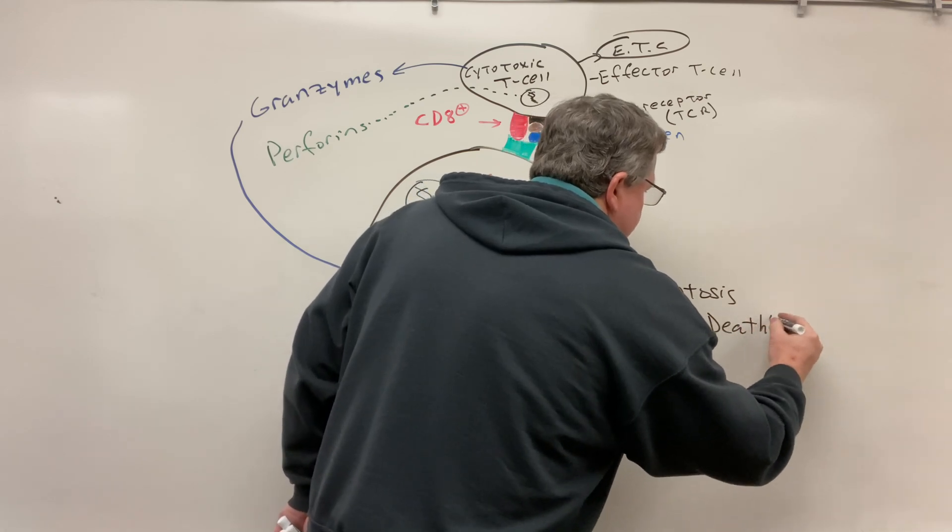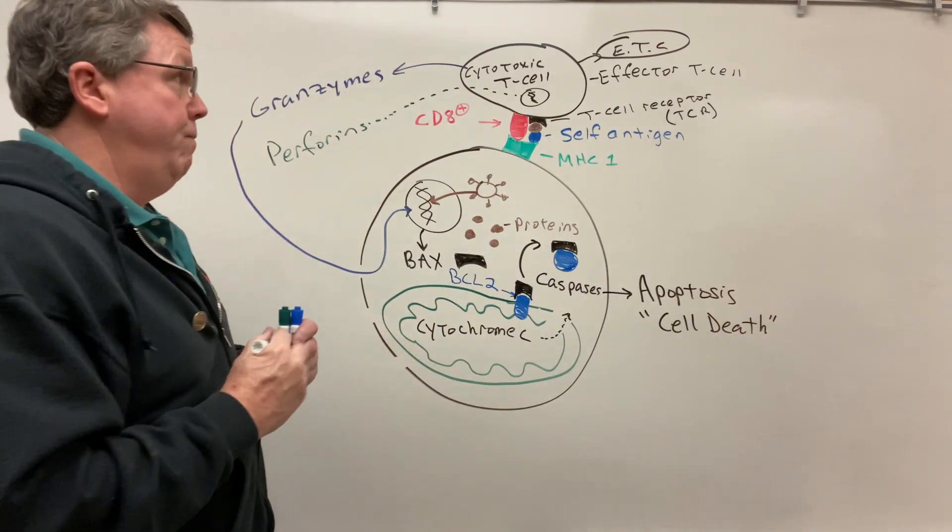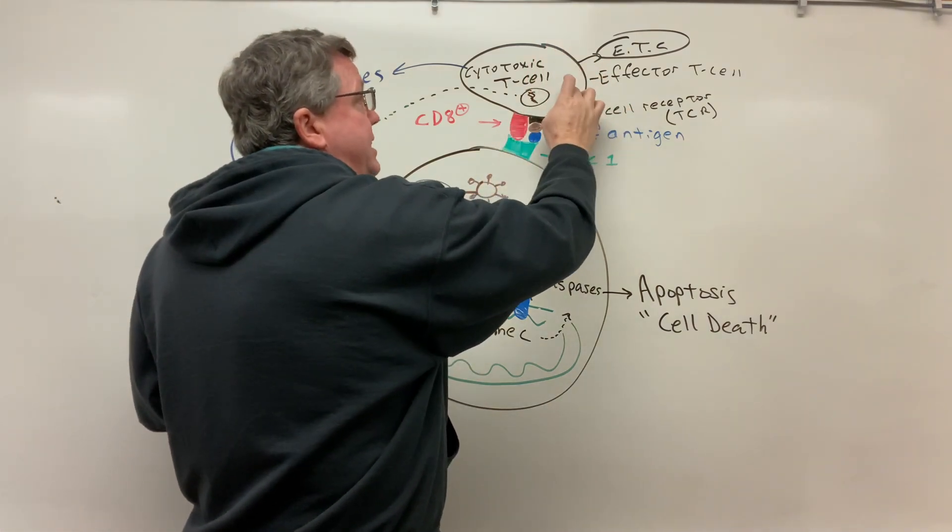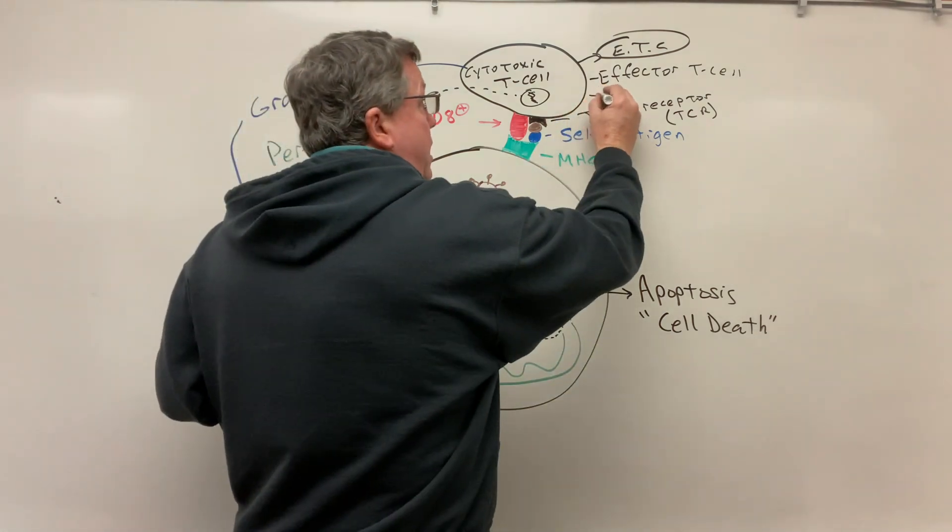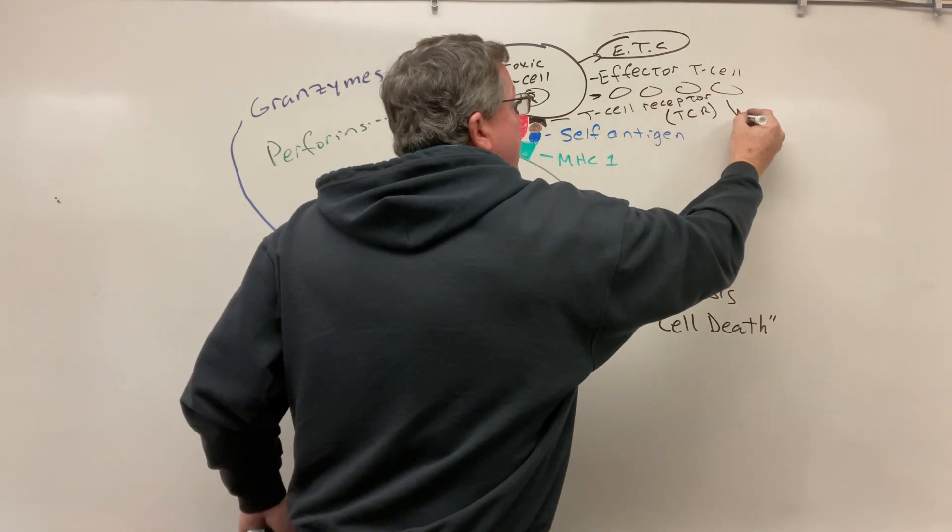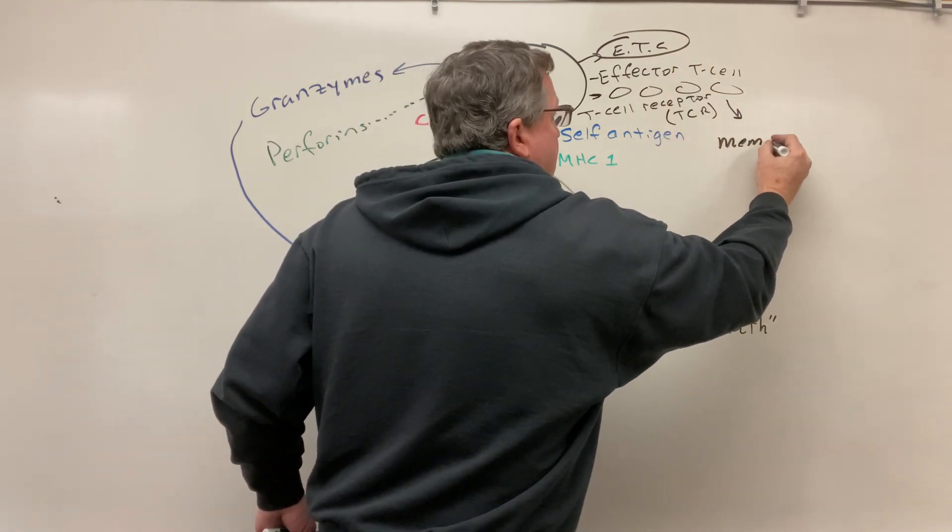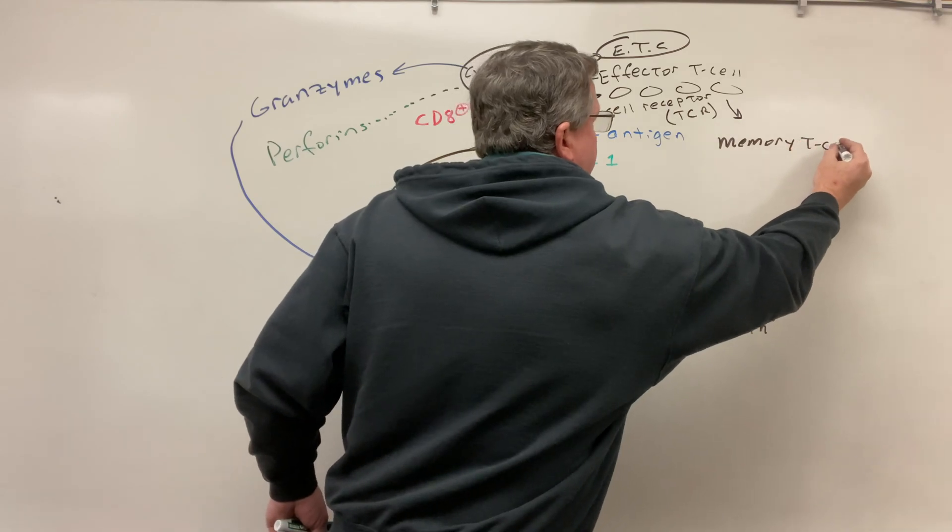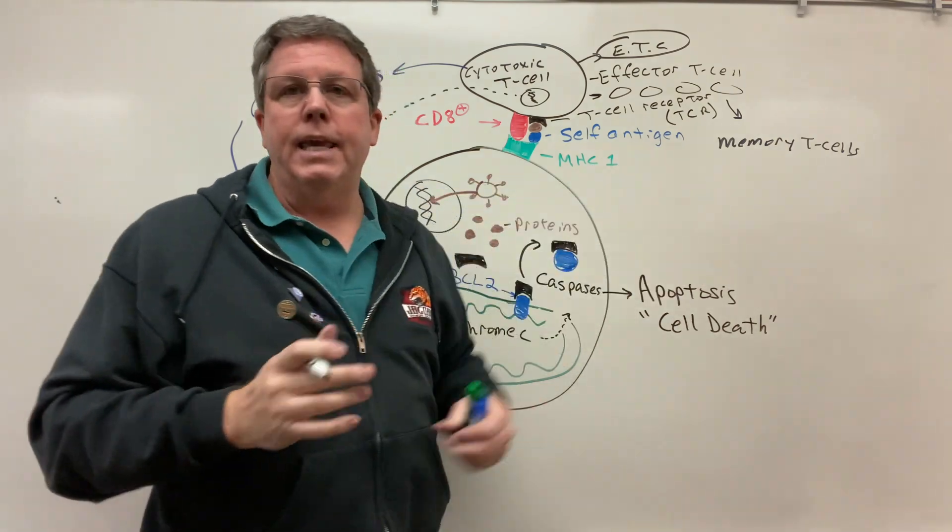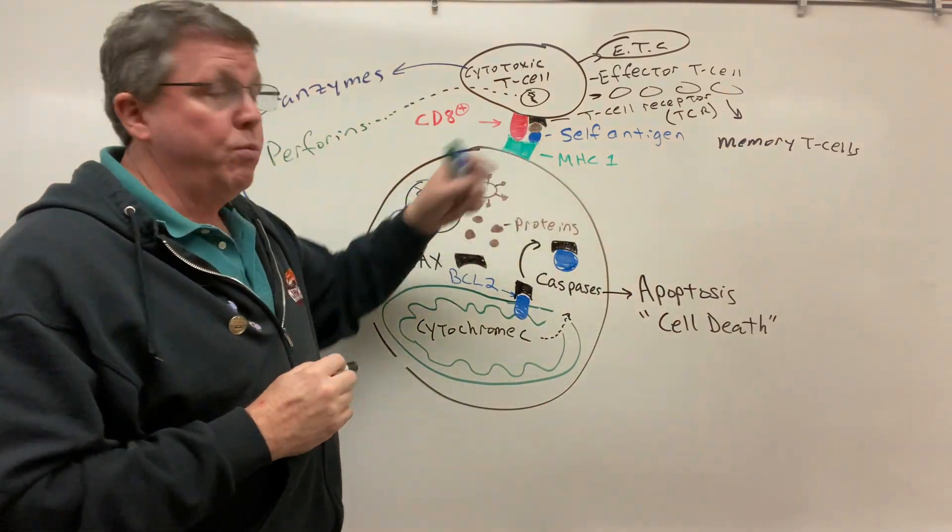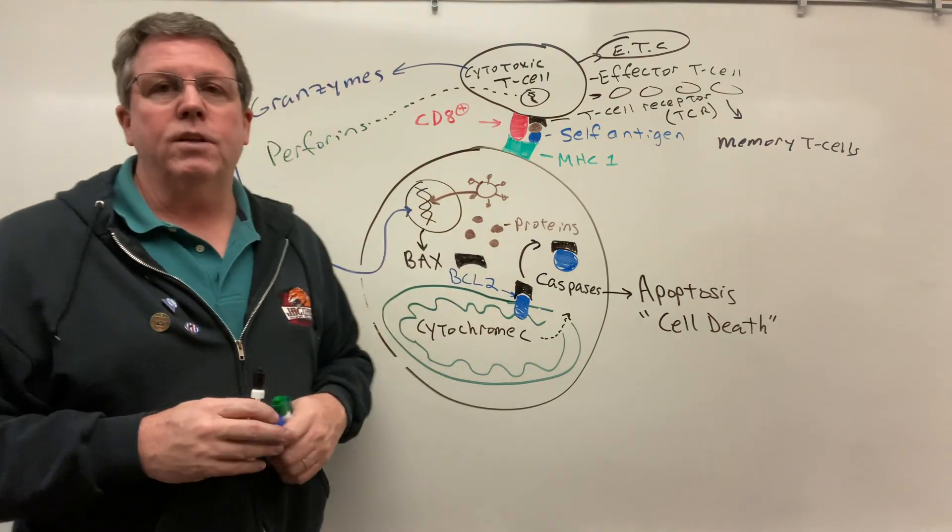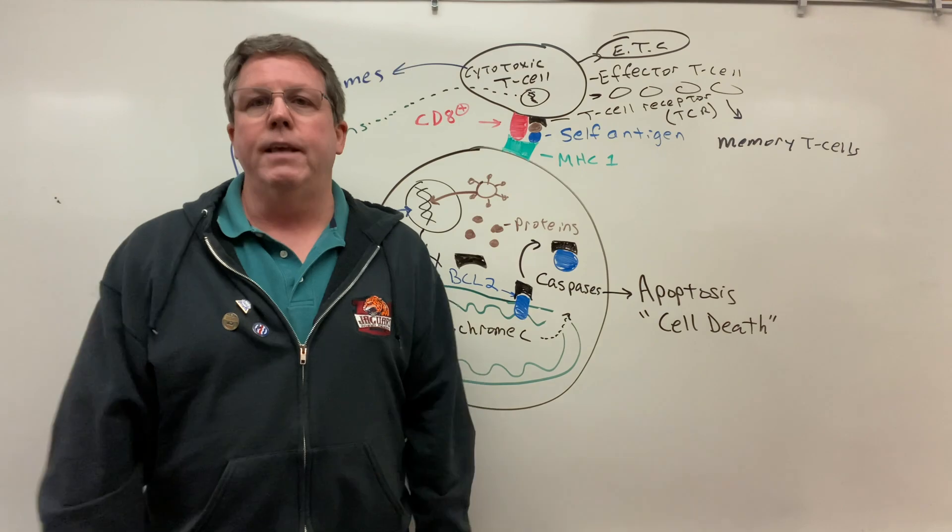Now after this is done, eventually what's going to happen is this effector T cell and all the other ones it made, because it's going to also multiply and make more effector T cells like I said up here, these are going to go on to become memory T cells, okay. And so the memory T cells again are going to be there in case we happen to run into this viral protein here again, now it's more prepared for the attack. So that's basically what cytotoxic T cells do, and thank you so much for watching.